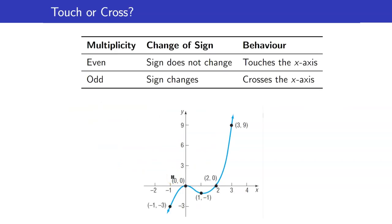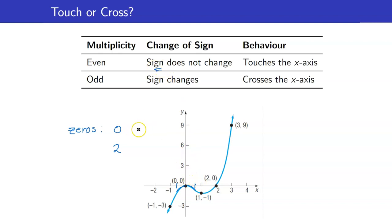The multiplicities of a polynomial function will tell us the behavior of a polynomial function around that particular zero. If the multiplicity is even, the polynomial function touches the x-axis. For example, in this graph, the zeros of the function are 0 and 2. If you look at 0, it just touches the x-axis, and notice that the y-coordinates here are negative, and on the other side the y-coordinates are also negative. The sign did not change, so this is saying that this one has even multiplicity.